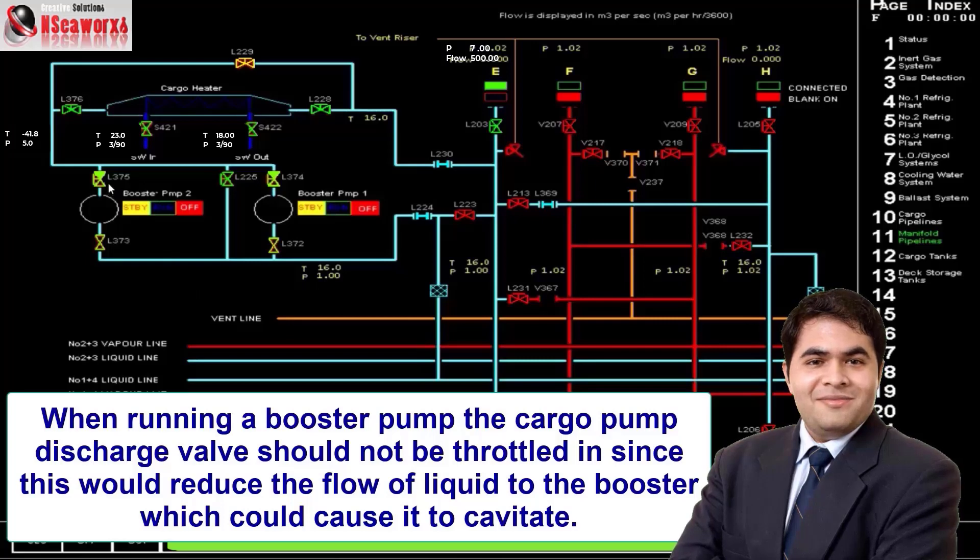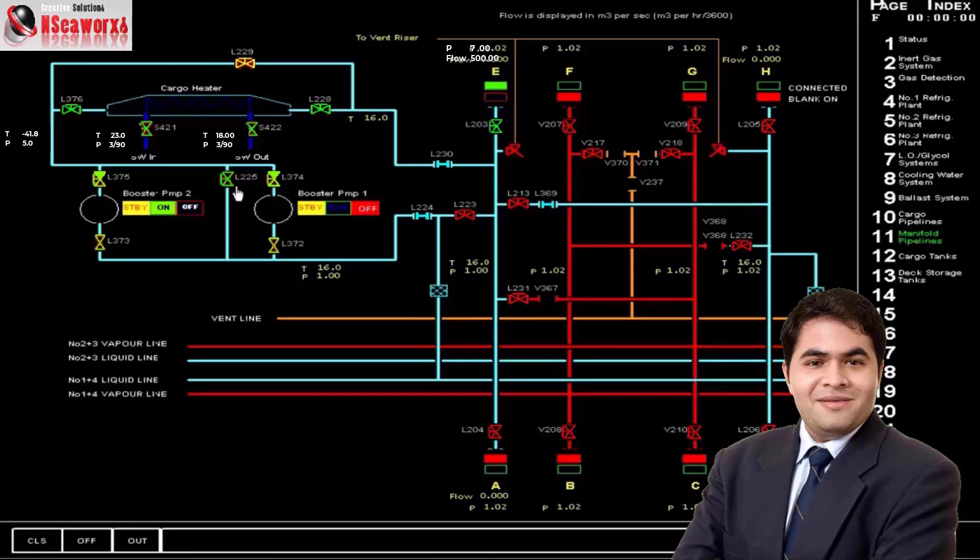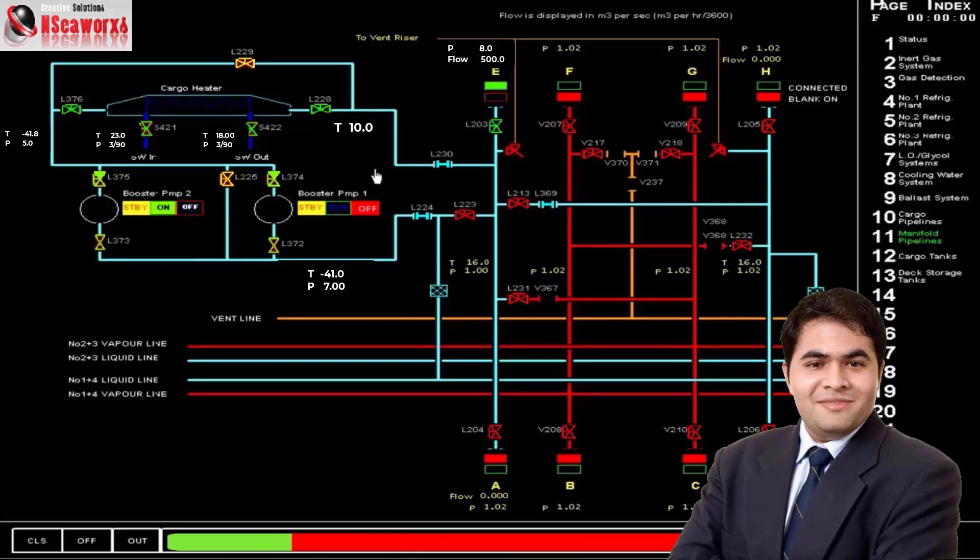The booster pump will control the discharge pressure, not the cargo tanks pump. Now that you are ready, then you can start. Let's say we start one pump. And we just start closing the circulation valve until you meet the required discharge pressure. In this scenario, you are still using the cargo heater. So it should be okay. But you have to adjust as well because you are now using a cargo booster pump and the flow will become faster.